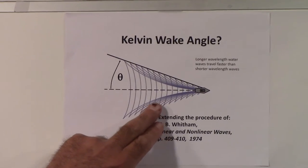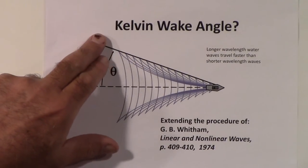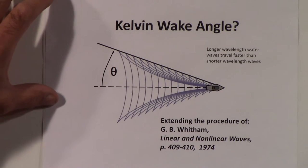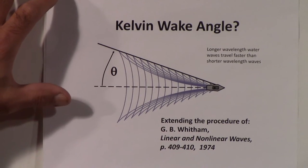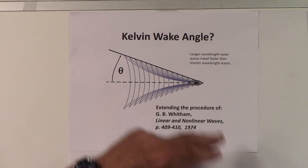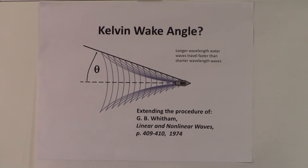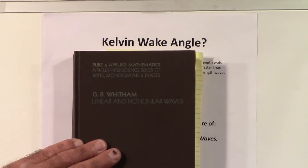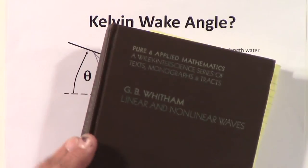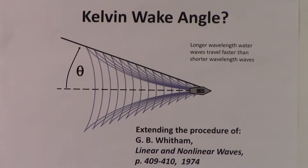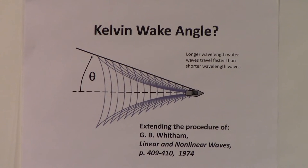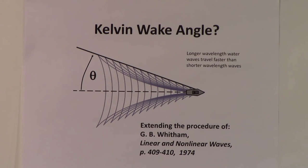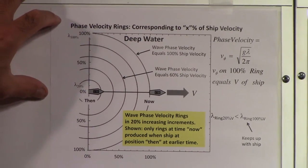If we look at the first chart here, we are looking at the first chart. You can see our ship, here's the Kelvin wake, and what we want to do is find out what this angle theta is. We're going to use the fact that longer wavelength water waves travel faster than shorter wavelength water waves. If you take a look at this book, Whitham, Linear and Nonlinear Waves, he has a procedure on this page. It's not exactly what I'm going to show you, but it is an extension of his procedure to find out what that angle is using a diagram.